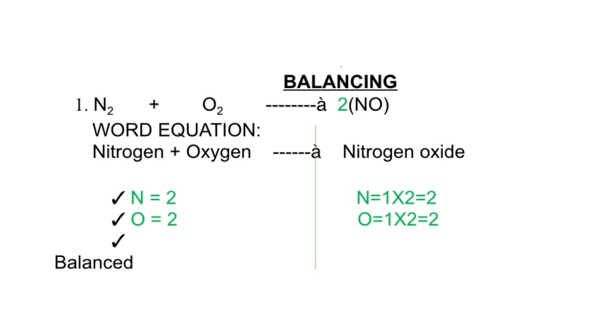Rather, we will increase or decrease the number of molecules. We will multiply the whole thing with two, so it will be nitrogen equal to two and oxygen also equal to two.